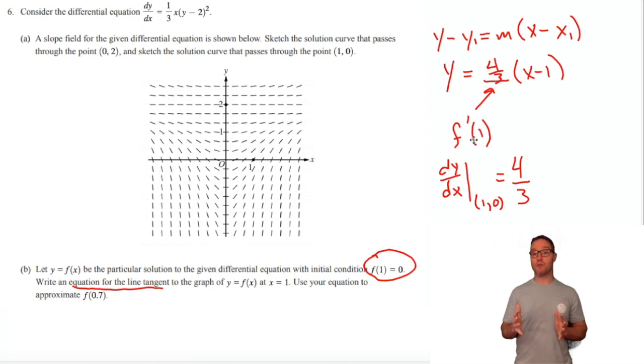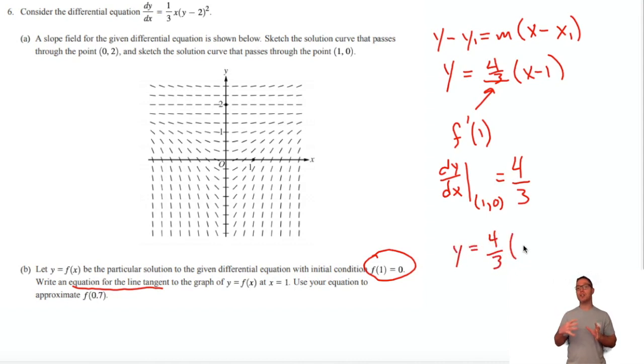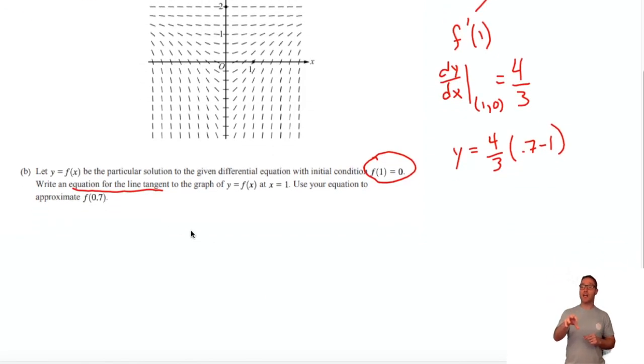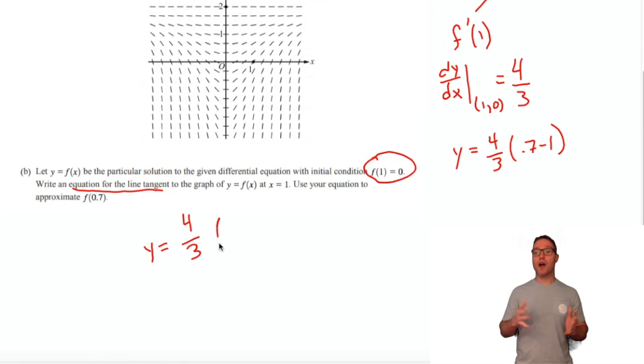Now the second part of the problem is to use this equation to approximate f(0.7). We're going to plug 0.7 into the linear equation we got, and that will be close to the behavior of the curve at 0.7, because the line is an approximation of the curve. If you zoom into the curve at that tangent line, you won't know the difference between the curve and the tangent line. This is going to be a good approximation because 0.7 is close to 1.